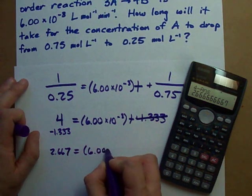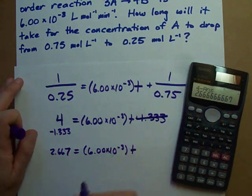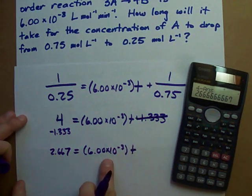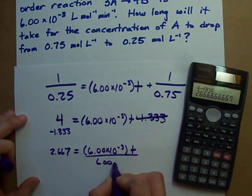And I'm still stuck with my 6.00 times 10 to the negative 3 on the right-hand side. How do I undo this multiplication? The answer is divide it out.